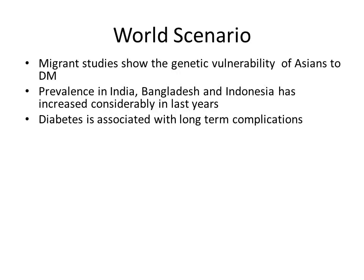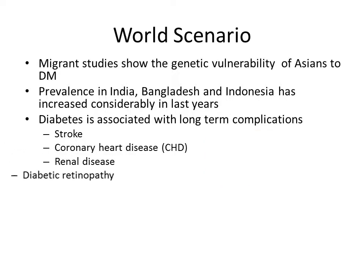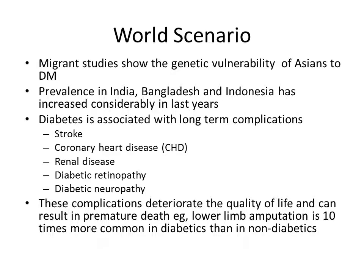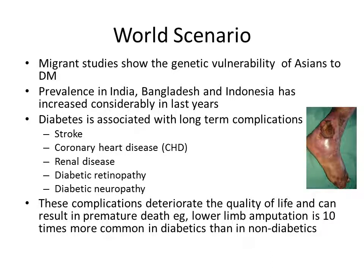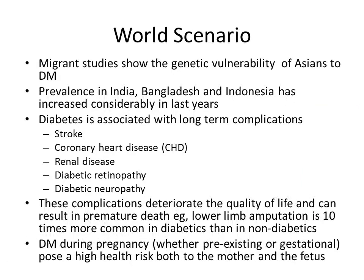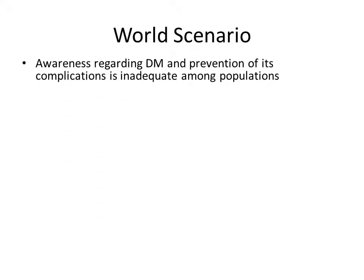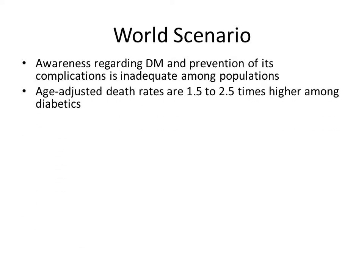Diabetes is associated with long-term complications like stroke, coronary heart disease, renal disease, diabetic retinopathy, and diabetic neuropathy. These complications deteriorate quality of life and can result in premature death — for example, lower limb amputation is 10 times more common in diabetics than non-diabetics. Despite these complications, awareness regarding diabetes and prevention of its complications remains inadequate. Death rates are considerably higher among diabetics compared to non-diabetics.